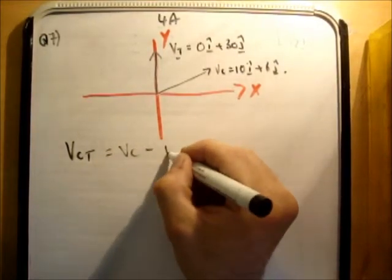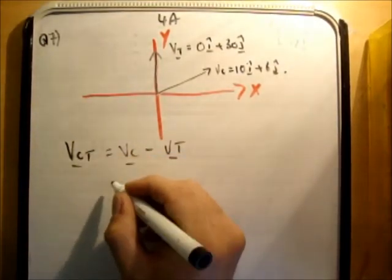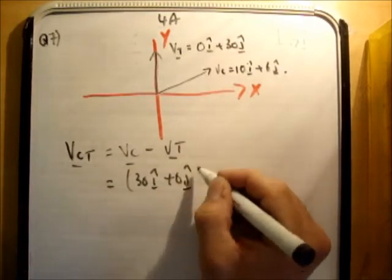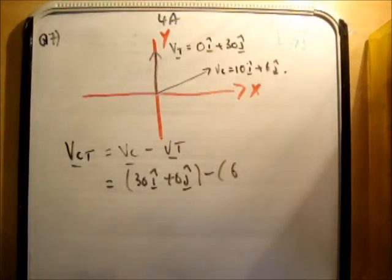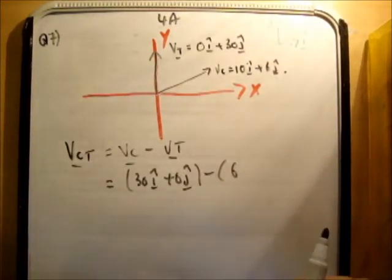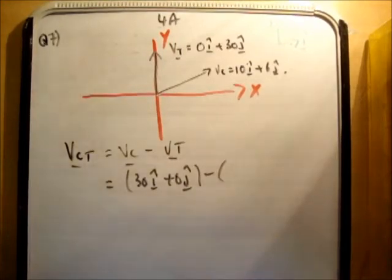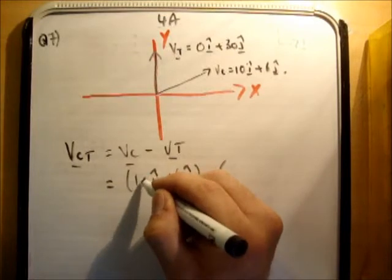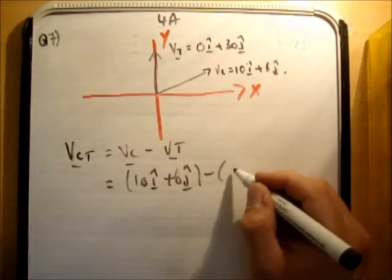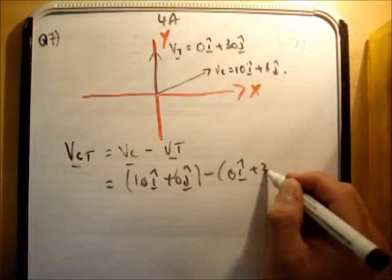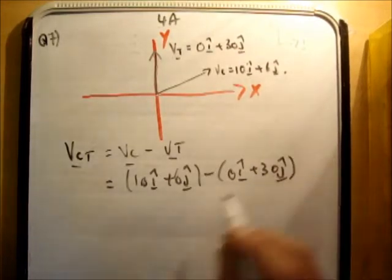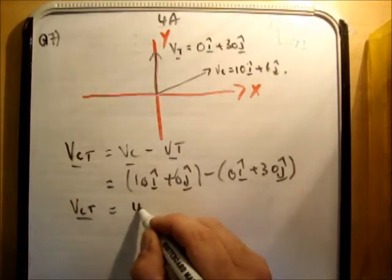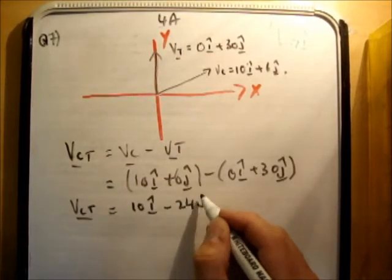So it's vc minus vt. And that's equal to 30i hat plus 0j hat minus 6... oh, minus, where's the vt? That's completely incorrect. So it's 10i hat plus 6j hat, I was looking at the wrong thing here, minus 0i hat plus 30j hat. Now you take into account your negative signs, you're going to get vct equal to 10i hat minus 24j hat.